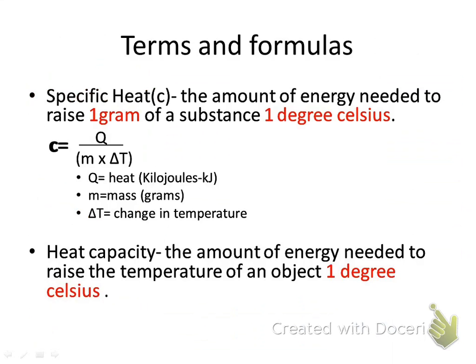Heat capacity is the amount of energy needed to raise the temperature of an object one degree Celsius. The main difference from specific heat is that specific heat is a set value calculated over time for each individual element or compound, whereas heat capacity may depend on the size and material of the object. If it is a metal, it may have a higher heat capacity, whereas a non-metal may have a much lower heat capacity.